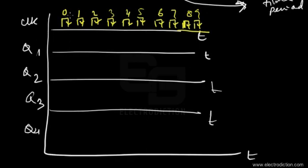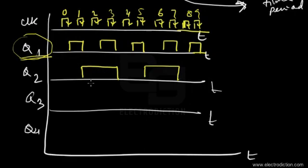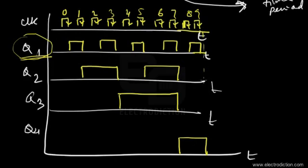On the falling edge of the first clock pulse, the output of Q1 goes to logic 1, then falls back at the negative edge of the second clock pulse, repeating at alternate time intervals. Q2 rises to logic 1 on the falling edge of Q1's output and continues for one full period of Q1. Q3 rises on the falling edge of Q2, and Q4 also rises and remains at logic 1 for only two clock periods.